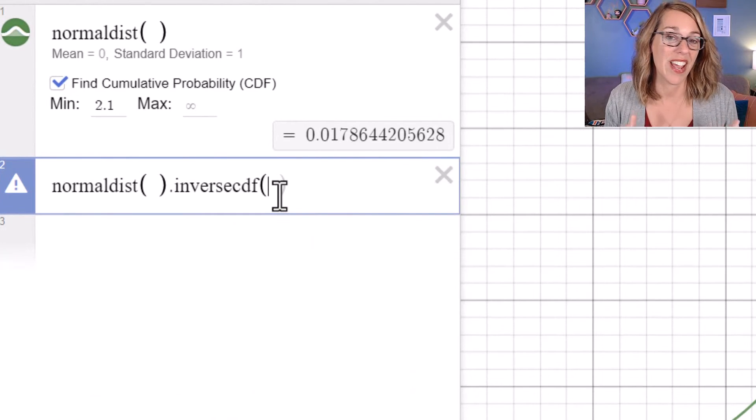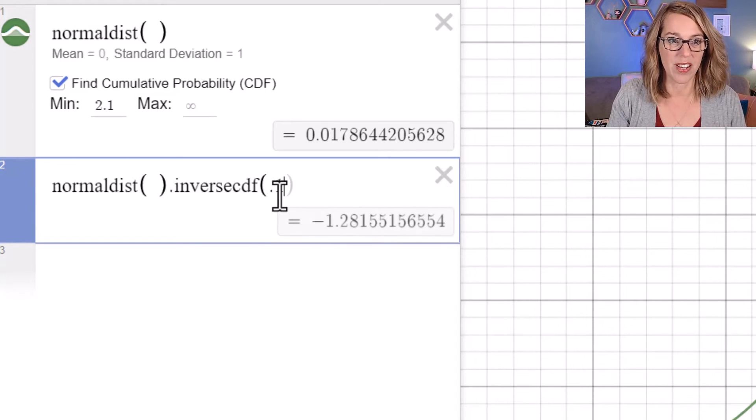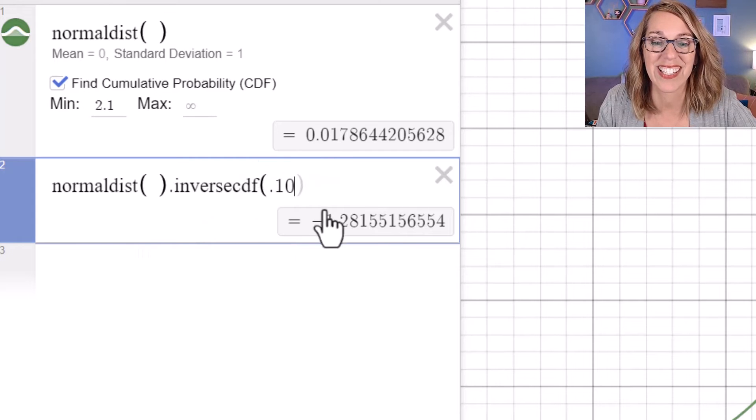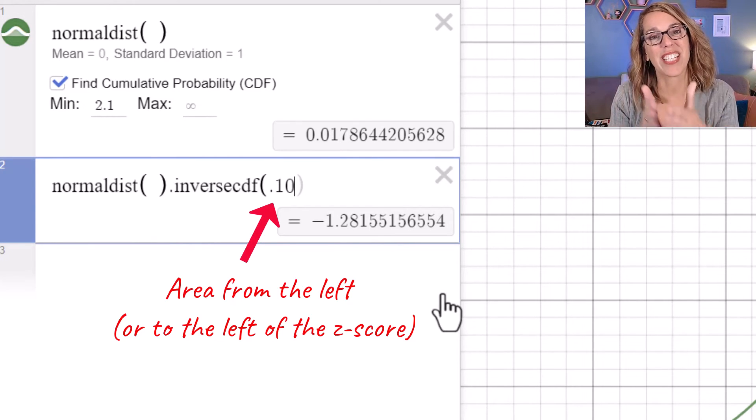So I'm going to give it an area. And if I give it an area, let's give it an area of 0.10. The area that I've given it is the area on the left-hand side. So whatever goes inside of inverse CDF is always going to be an area from the left, which is why it's giving me that Z score of negative 1.28.